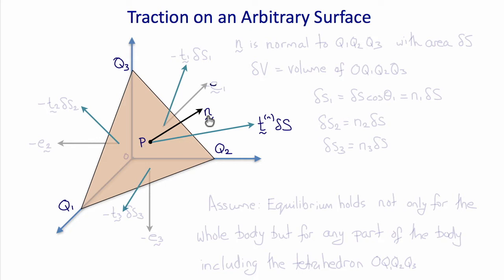And if we were to look at the back side of this tetrahedral volume and consider that there are reaction forces on each of these faces, then we could label minus t1 times delta s1, the area of this triangle, on the face whose normal is minus e1, minus t2 delta s2 on the face whose normal is minus e2, and minus t3 delta s3 on the face whose normal is minus e3.